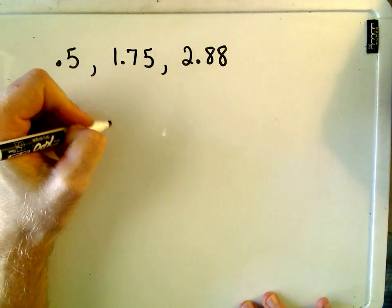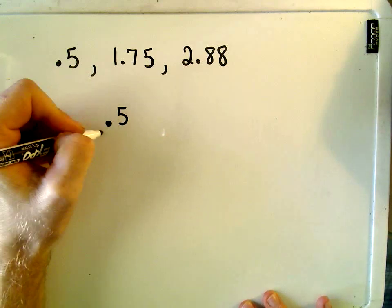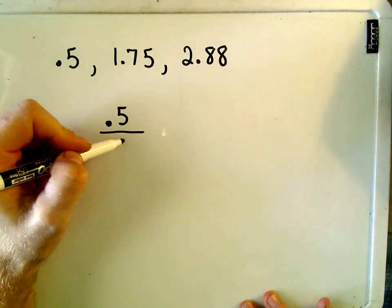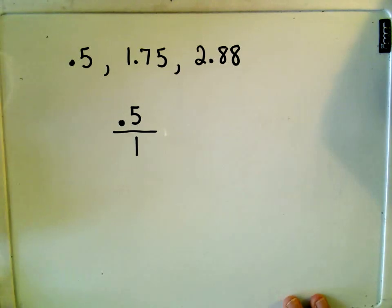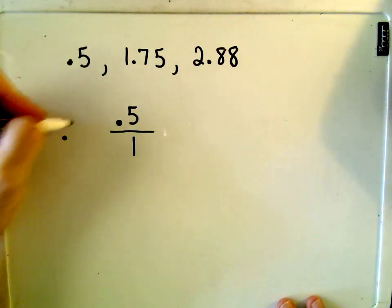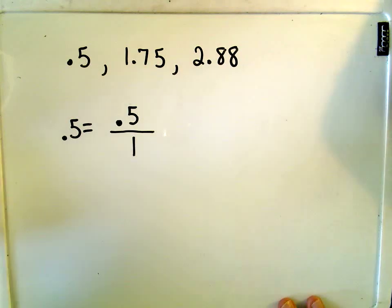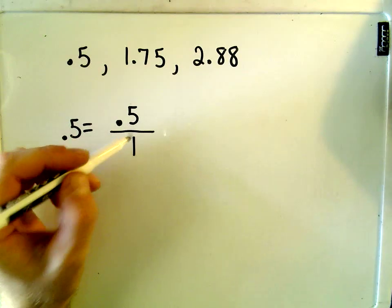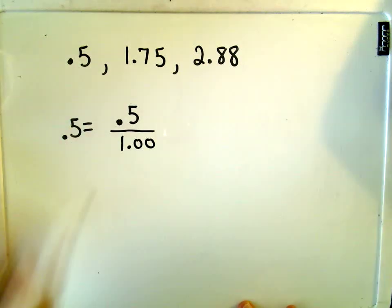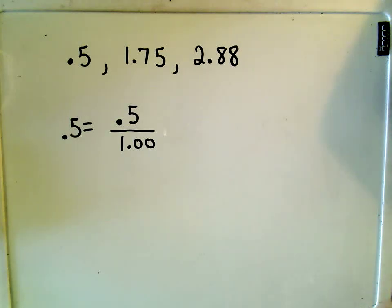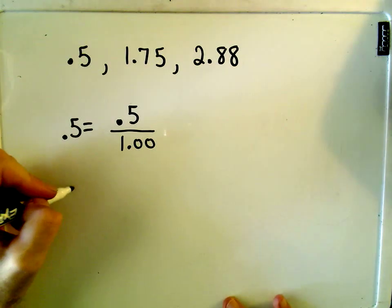Let's start with 0.5. The first thing I do is, you can take any number and divide it by 1, and that's still the exact same number that you started with. On my 1, I'm going to add on a couple zeros. My goal is to get rid of the decimal in the numerator.